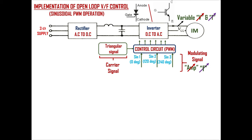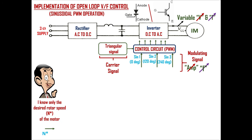Our work is now straightforward: based on the required rotor speed, first find the desired voltage and frequency to give to the induction motor, then vary the amplitude and frequency of the modulating signals accordingly. A non-technical person knows only the desired rotor speed n* — our duty is to convert this desired rotor speed n* to the desired amplitude and frequency of three modulating sinusoidal signals with 120-degree phase shift using DSP controllers. First, convert the desired rotor speed to the desired frequency f* by multiplying by P divided by 120, where P is the number of poles in the motor.